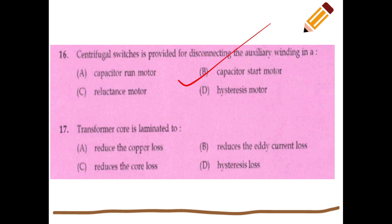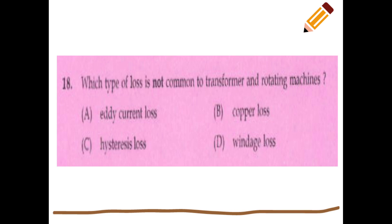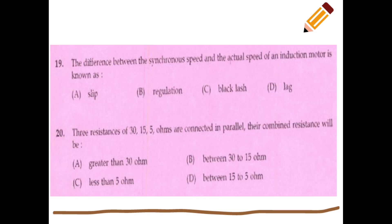The transformer core is laminated to reduce eddy current loss. Which type of loss is not common to transformers and rotating machines? The difference between the synchronous speed and the actual speed of an induction motor is known as slip.